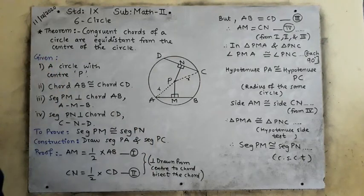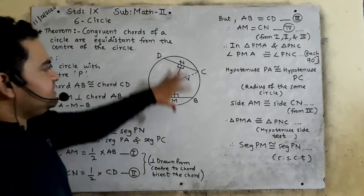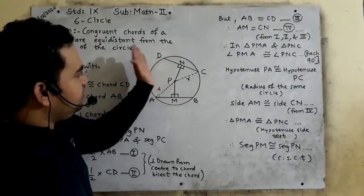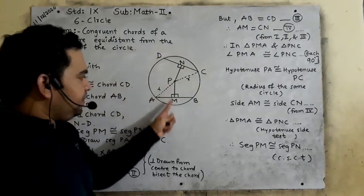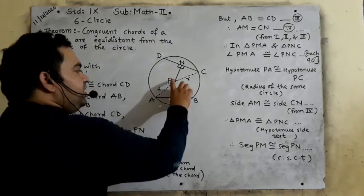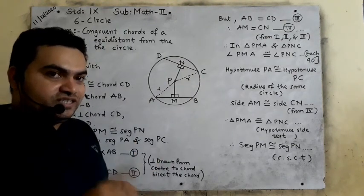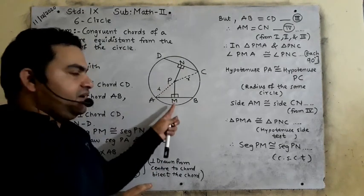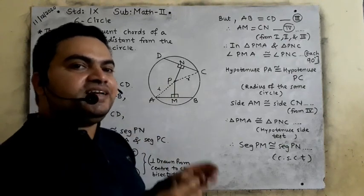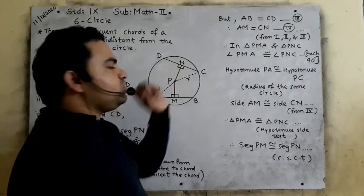We have to prove that. In this figure, PN is perpendicular on chord CD and PM is perpendicular on chord AB. PM and PN are the distances between the center and the two chords. Always remember, the perpendicular is the only distance between the center and the chord. This center is connected to this chord, and this center is connected to this chord.